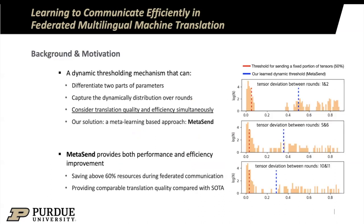Some challenges are involved when deciding a boundary between these two parameter groups. First, the threshold should be sensitive to the dynamically changing distribution over federated learning rounds. And most importantly, this threshold should consider performance so we can capture efficiency and performance simultaneously. Our goal is to solve these challenges and provide a dynamic threshold — the blue one in the figures — that can differentiate two groups based on parameter deviation.